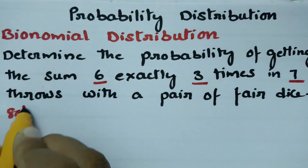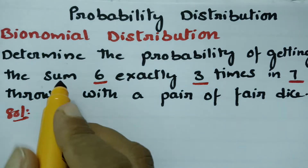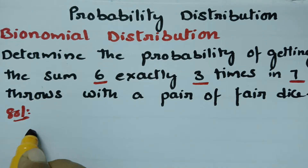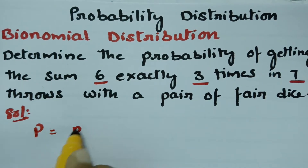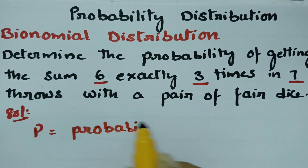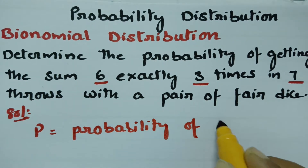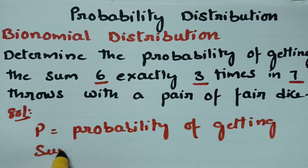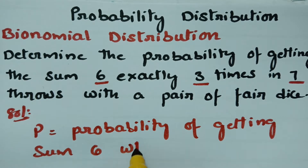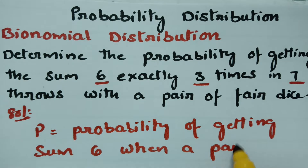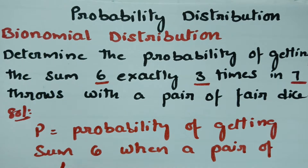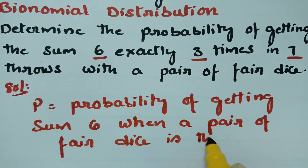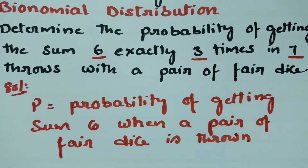In the solution, we need to get the sum 6 when a pair of fair dice is thrown. So P is the probability of getting sum 6 when a pair of fair dice is thrown. Let's find the chances of getting a sum of 6.